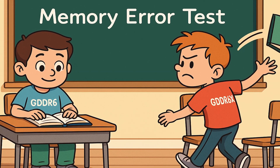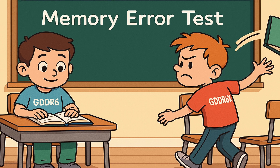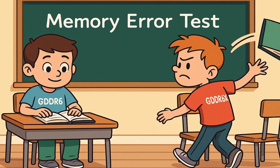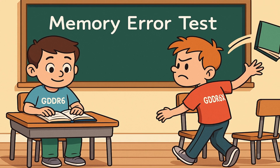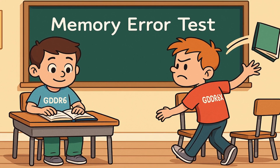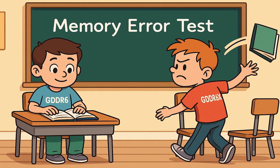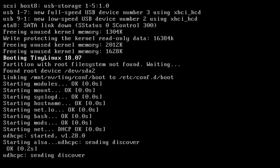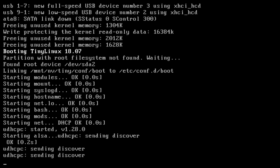Think of two kids reading a book in class. One is very calm and will keep going even if he misses a word — that's GDDR6. The other kid is super strict: if he gets one word wrong, he shuts the book and walks out — that's GDDR6X. GDDR6 will let you boot even if one memory chip has a problem, and you can do basic testing. But GDDR6X — one tiny mistake and the whole GPU says no.